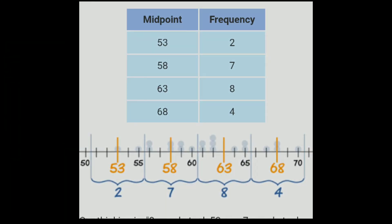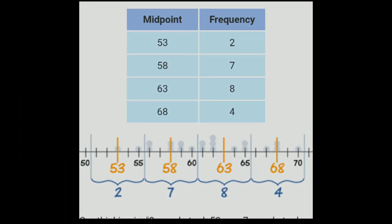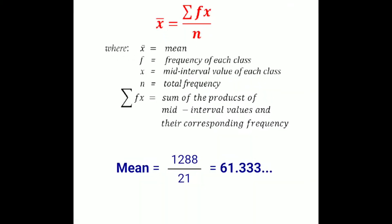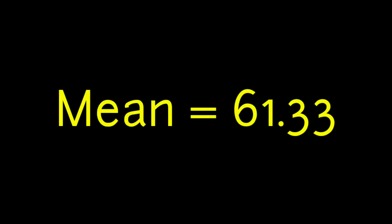Here is the table showing the frequencies and the midpoints. Next, we have to multiply each midpoint by each frequency, add them up, and divide by the total frequency, which is 21. The summation of f times x divided by n equals 61.33, and this will be the value of the mean.